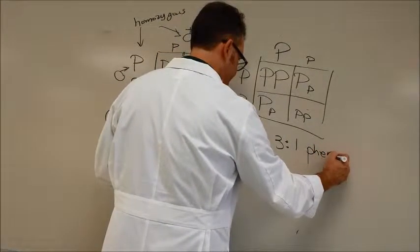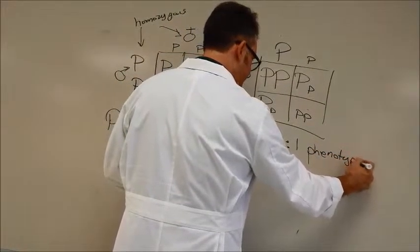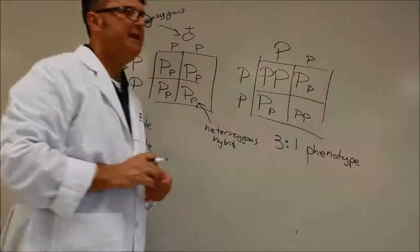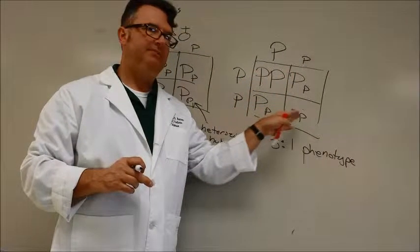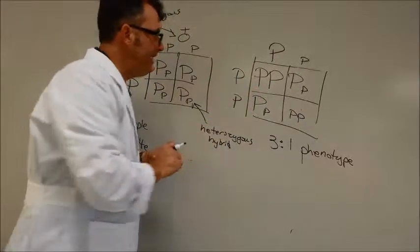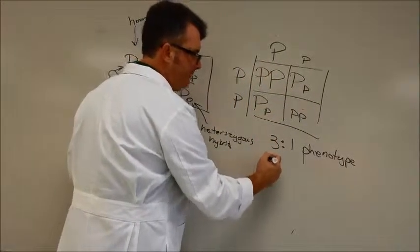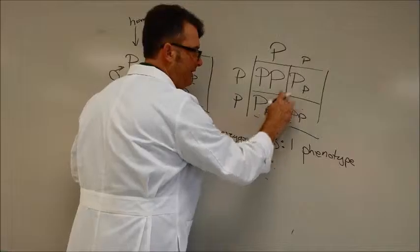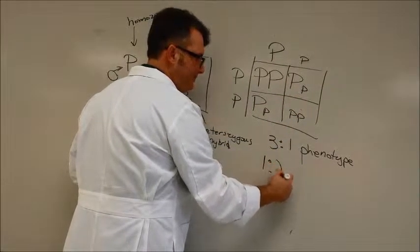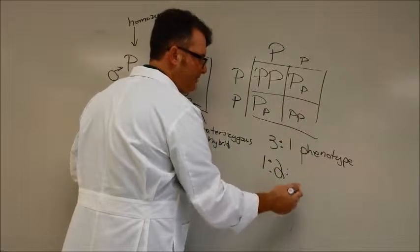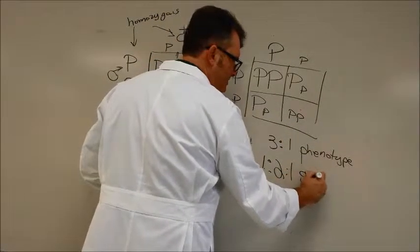This, by the way, is called the phenotype. If we look at this, however, that's not the actual relationship we see. We actually see one of these big P, big P's. How many of these transition ones, these hybrids, do we see? We see two of those, and how many of the white ones? One. This is called the genotype.